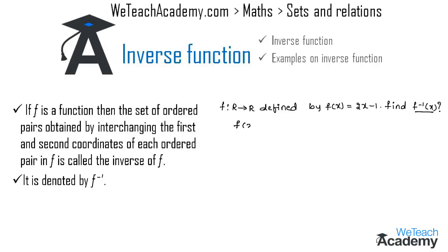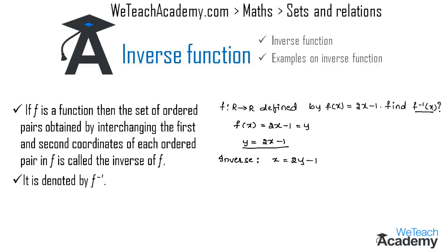The given function is f(x) = 2x minus 1. Let us consider it as y, so we write y = 2x minus 1. The inverse of this function is found by interchanging x and y, giving us x = 2y minus 1.